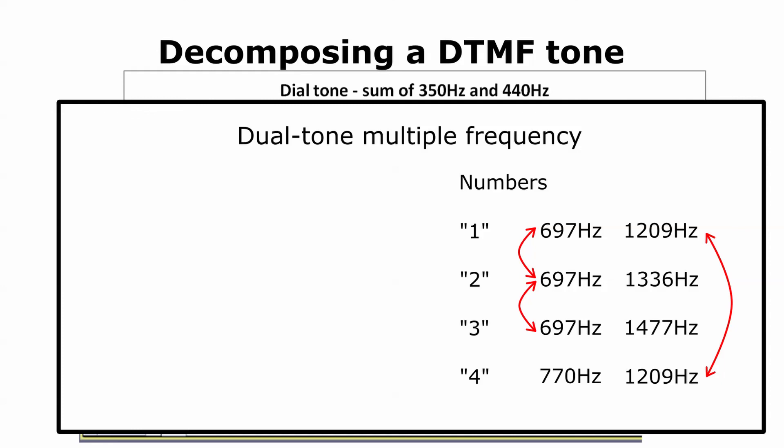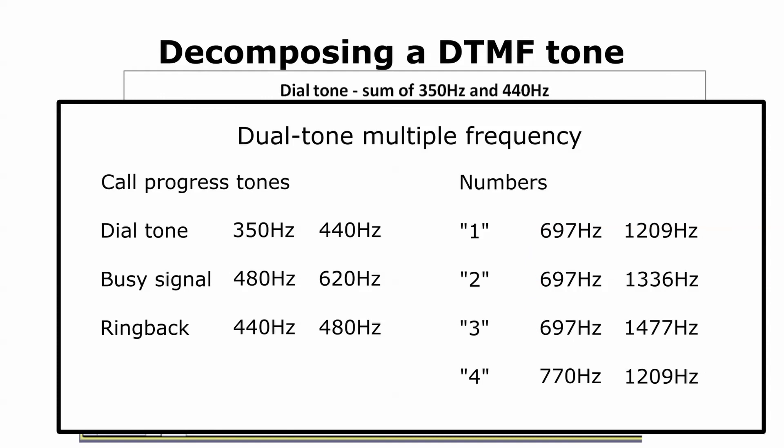There's a separate schedule of frequency for call progress tones. Call progress tones are the signals which you hear at different stages of the process through which a telephone call proceeds. The dial tone is one, as are the busy signal and the ring-back signal you hear when the phone on the other end is ringing. There are others, too, for call waiting and so on. Each one is the sum of cosine waves at two frequencies, as shown.